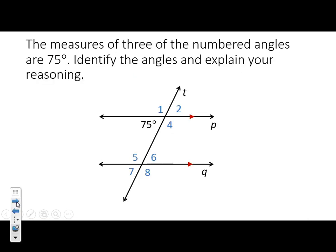In your notes, I want you to draw this quick sketch on a separate sheet of paper — no room on your foldable. We've got two parallel lines with arrows showing they're parallel. Lines T and Q are parallel, cut by transversal T. We have angles labeled 1, 2, 4, 75 degrees, 5, 6, 7, and 8. We should be able to figure out all the angles from just that one given.